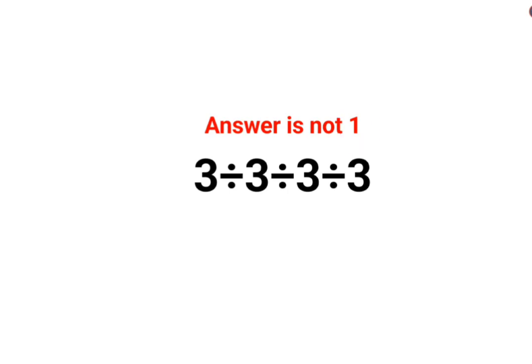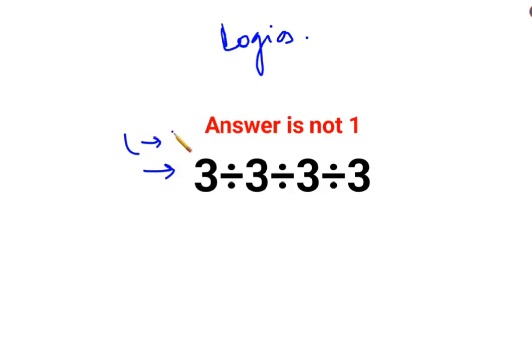You are not supposed to do what looks very easy first. You need to follow certain patterns or certain logic. So in this case, for sums like these, you need to go from left to right. Whenever you just have multiplication or just division, go from left to right — whatever operation comes first from the left-hand side has to be done first.